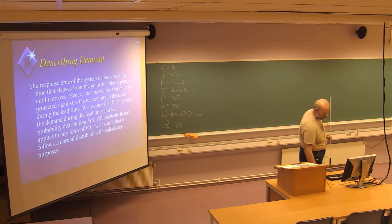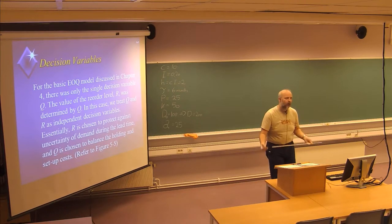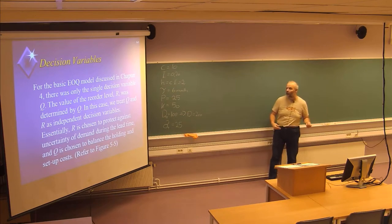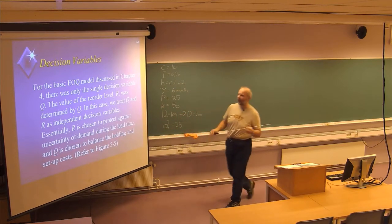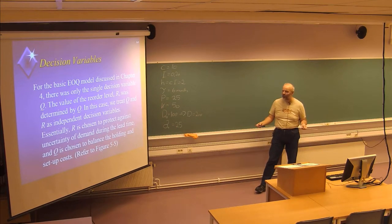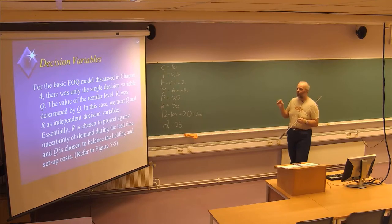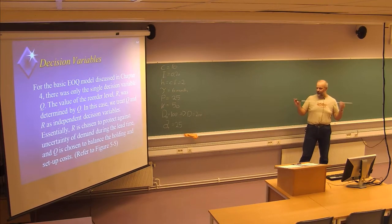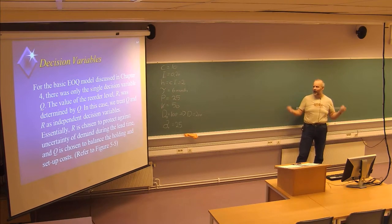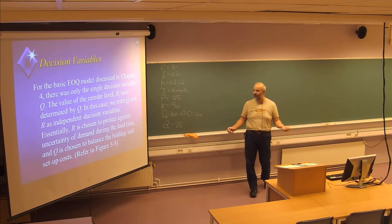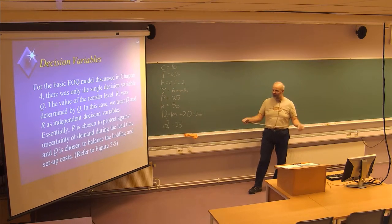Then we talked about the so-called QR model, or lot size reorder point model, which is more closely related to the traditional EOQ model. But now, instead of having fixed demand, we need to find the optimal combination of order size Q and the reorder point R — the stock level at which you place a new order. Since you have uncertainty, you don't know exactly how much demand you will have in the lead time — the time from placing the order until receiving the goods. That uncertainty in the lead time determines whether you will have a stock-out and the size of the safety stock.